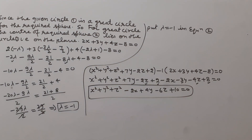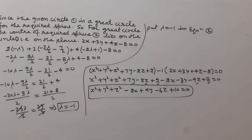To summarize: to find the equation of the sphere for which the given circle is a great circle, we write the family of spheres through the given circle as S + λP = 0 and find the center. Since the given circle is a great circle, the center lies on the plane. We substitute the center into the plane equation to find λ, then substitute λ back to get the required sphere.